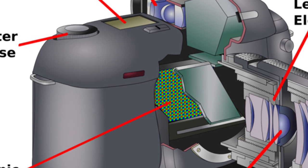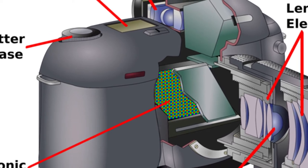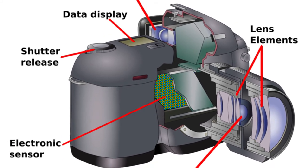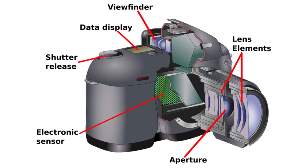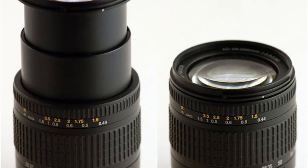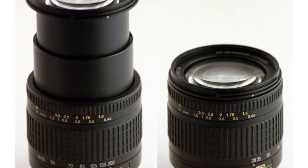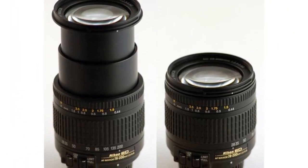Lenses can be either fixed permanently to the body or interchangeable. A condenser lens is made up of two matching convex lenses. This part uses a simple method for correcting color fringing or aberration, which is a common problem encountered when using traditional camera lenses.